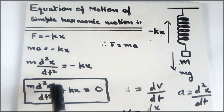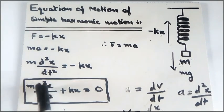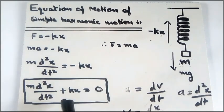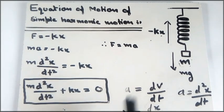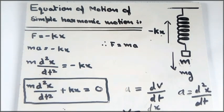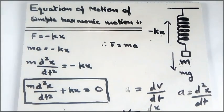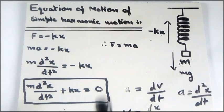Whenever you find an equation where the double derivative of some quantity is equal to that quantity multiplied by a constant, that equation represents simple harmonic motion. The motion governed by that object is simple harmonic.